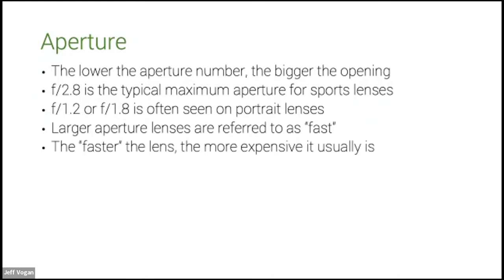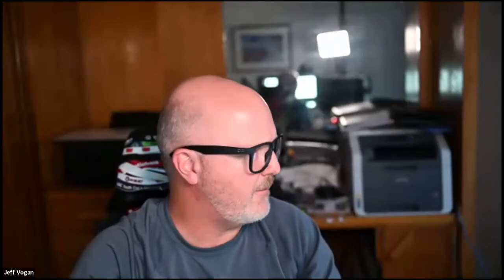If you go with a 5.6 lens, which is typical of a kit lens, it might be a few hundred dollars. Whereas my 2.8 lenses — even my smallest one — is like three and a half thousand dollars for a 2.8 lens.